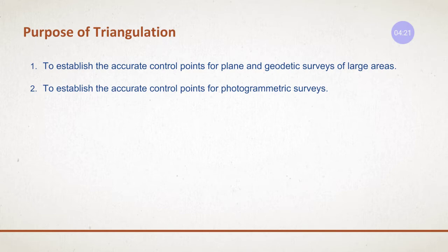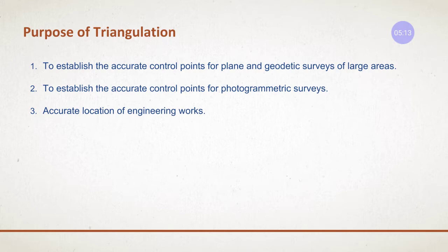The next purpose is to establish accurate points for photogrammetric survey. Photogrammetric survey is when you take photographs or video records from above the earth's surface using instruments or vehicles — such as a helicopter, aircraft, or drones — to capture the area and measure its details. That type of survey is called aerial survey or photogrammetric survey, where a photo is captured from a certain elevation. Triangulation helps establish accurate control points for this type of survey.